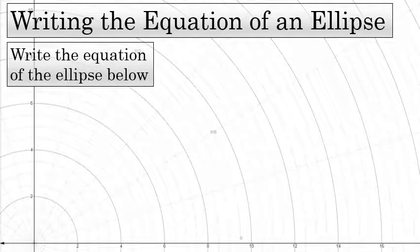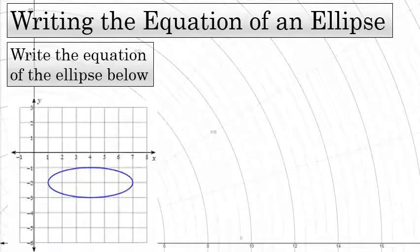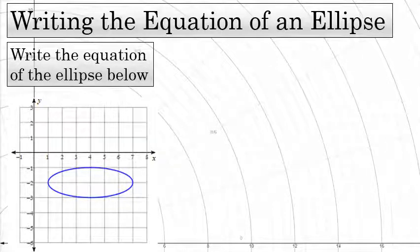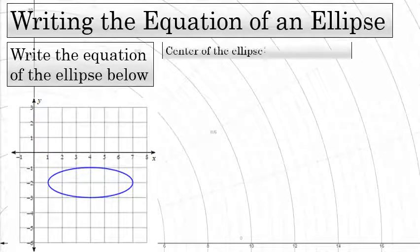Write the equation of the ellipse shown in this graph. To write the equation of an ellipse, you first need to identify some of the properties that every ellipse has.